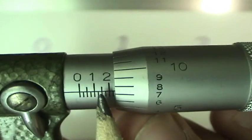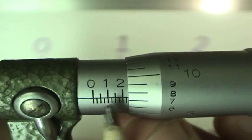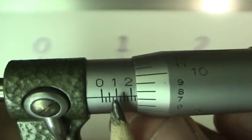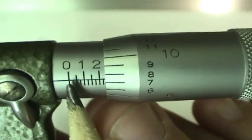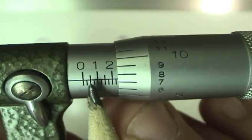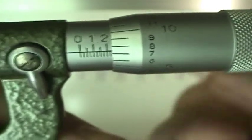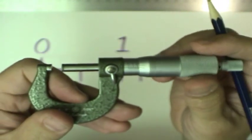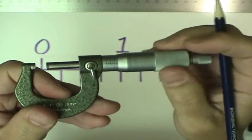First of all, just look at the scale on the barrel or the sleeve. I'm going to just call it the barrel of the micrometer. This is the barrel scale, and what we've got here is an inch micrometer and so it goes from zero to one inch.